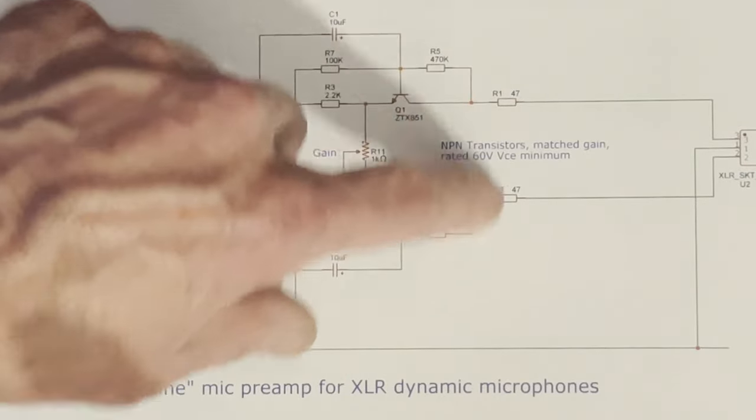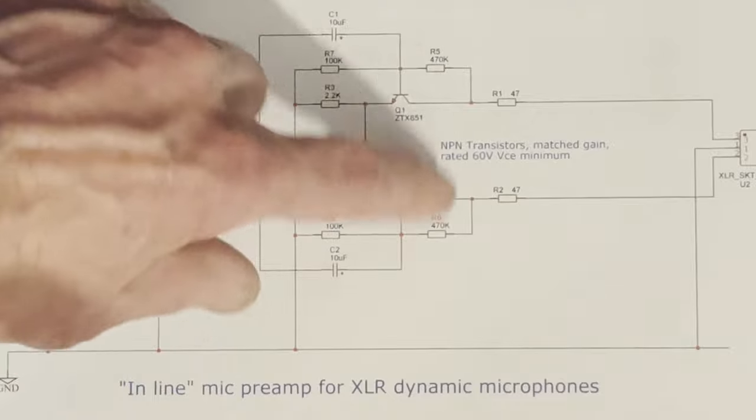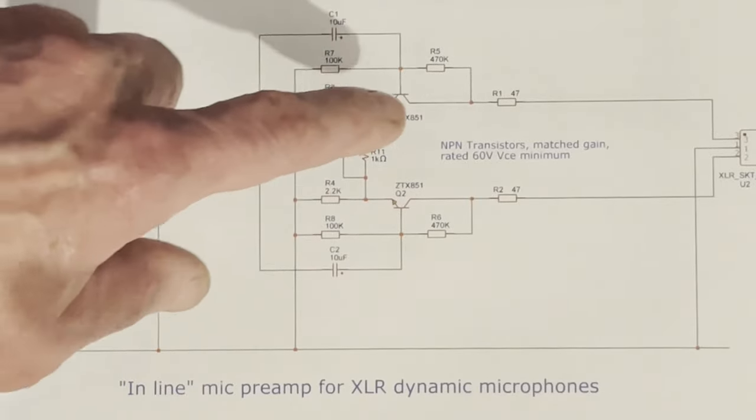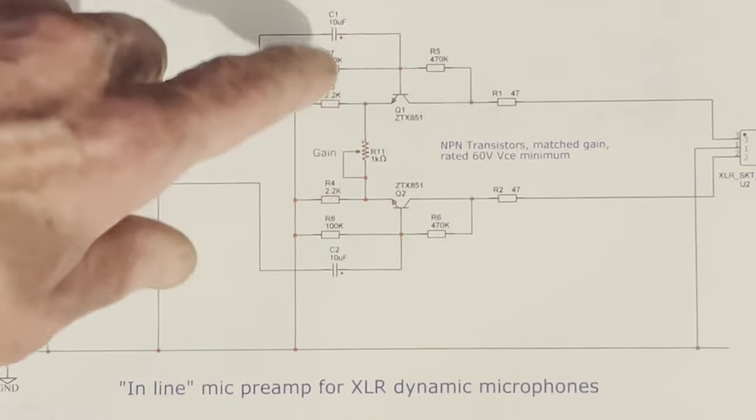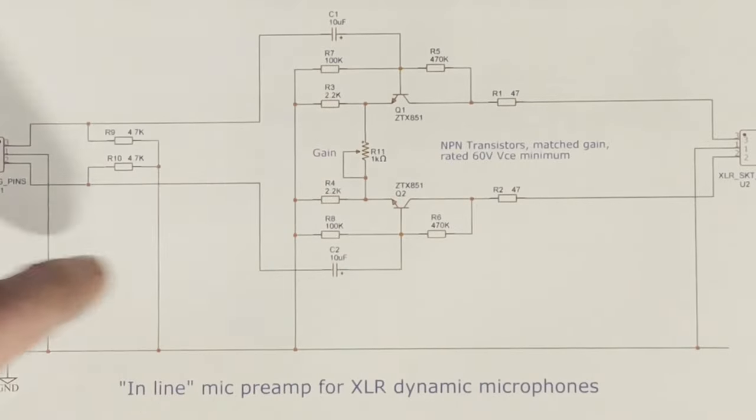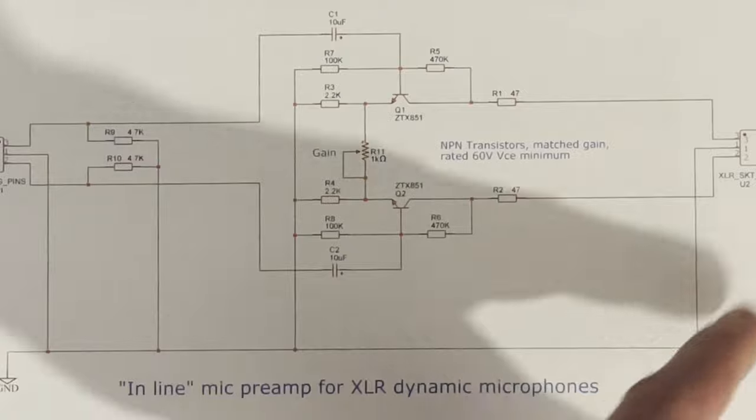And then just a low value series output resistor just for a bit of filtering. You could have a choke in that position if you wanted better RF filtering, and you could also put small, say 47 pF or 100 pF or something like that, capacitors between the pins and ground on each socket if you had a problem with RF interference or anything like that.